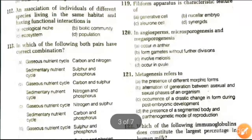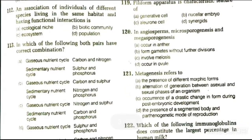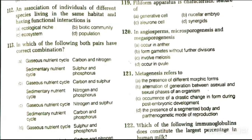Next question: an association of individuals of different species living in the same habitat and having functional interaction is what? Options are ecological niche, biotic community, population, ecosystem. The answer is biotic community. The correct pair for gaseous nutrient cycle is carbon and nitrogen, and for sedimentary nutrient cycle is sulfur and phosphorus. Answer is A.